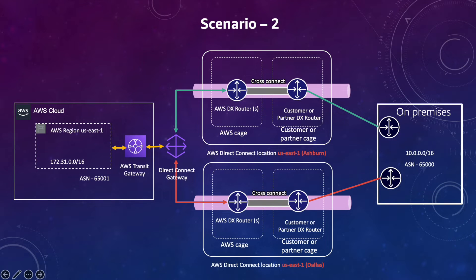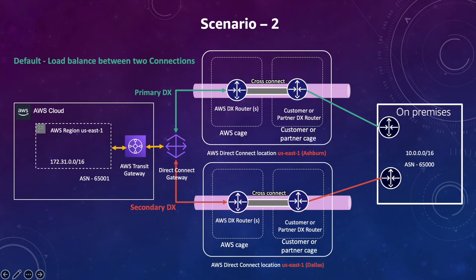Scenario two: two Direct Connect connections across two different locations — Ashburn and Dallas — both in the US East region, connecting to services also in US East. By default, AWS load balances across both locations since both are in the home region. To make one primary and one secondary, use BGP communities: BGP community 7300 with higher preference for the Ashburn location makes it primary, and 7100 with lower preference for Dallas makes it secondary. If Ashburn fails, traffic falls back to Dallas.